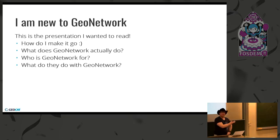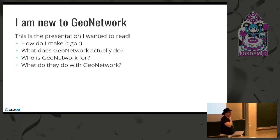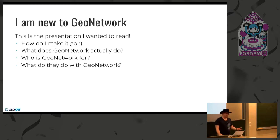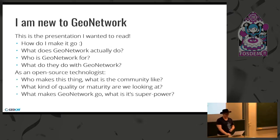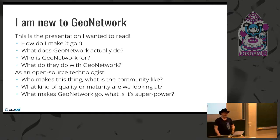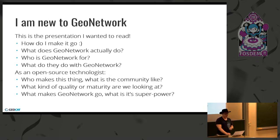But nowhere on that previous slide did it say GeoNetwork. That's a problem because GeoCat's main bread and butter, their expertise, is in GeoNetwork. So this is the presentation I wanted to read when I joined the company: How do I make it go? What does it actually do? Who's it for? What on earth are they using it for? And as an open source person — who makes this thing? What's the community like? Who's paying for it? What kind of maturity are we looking at in the code base? What's its superpower? Or can I rewrite it in Python in an afternoon?